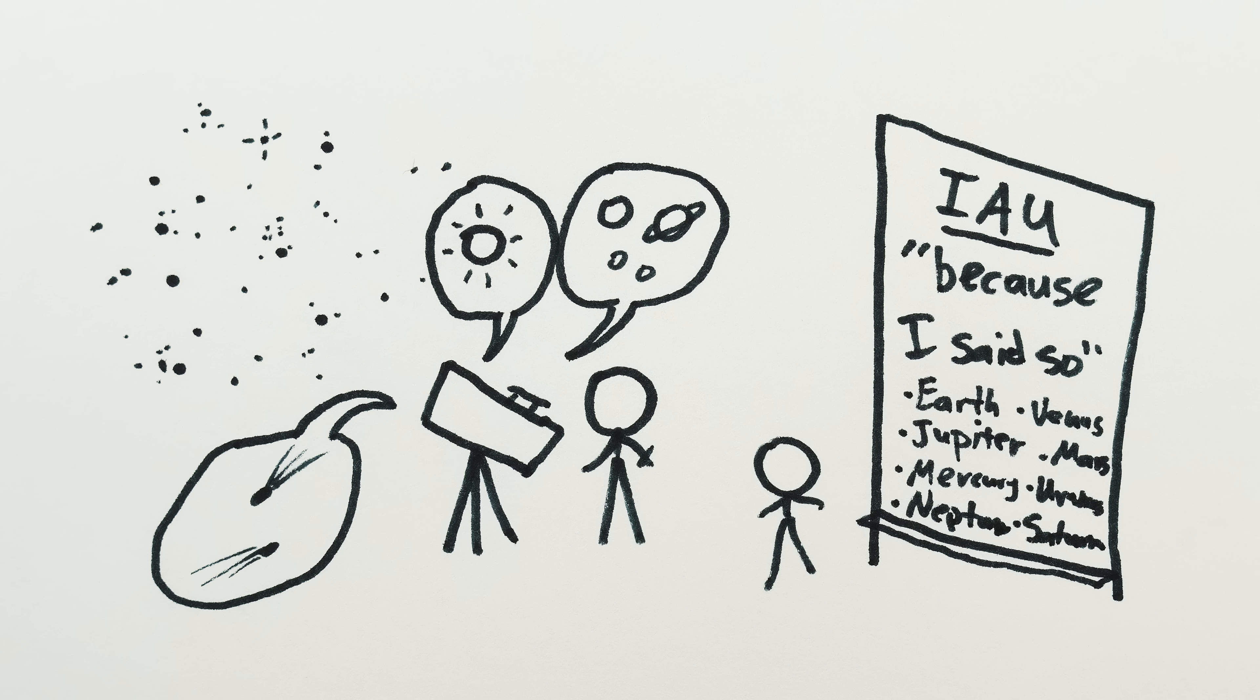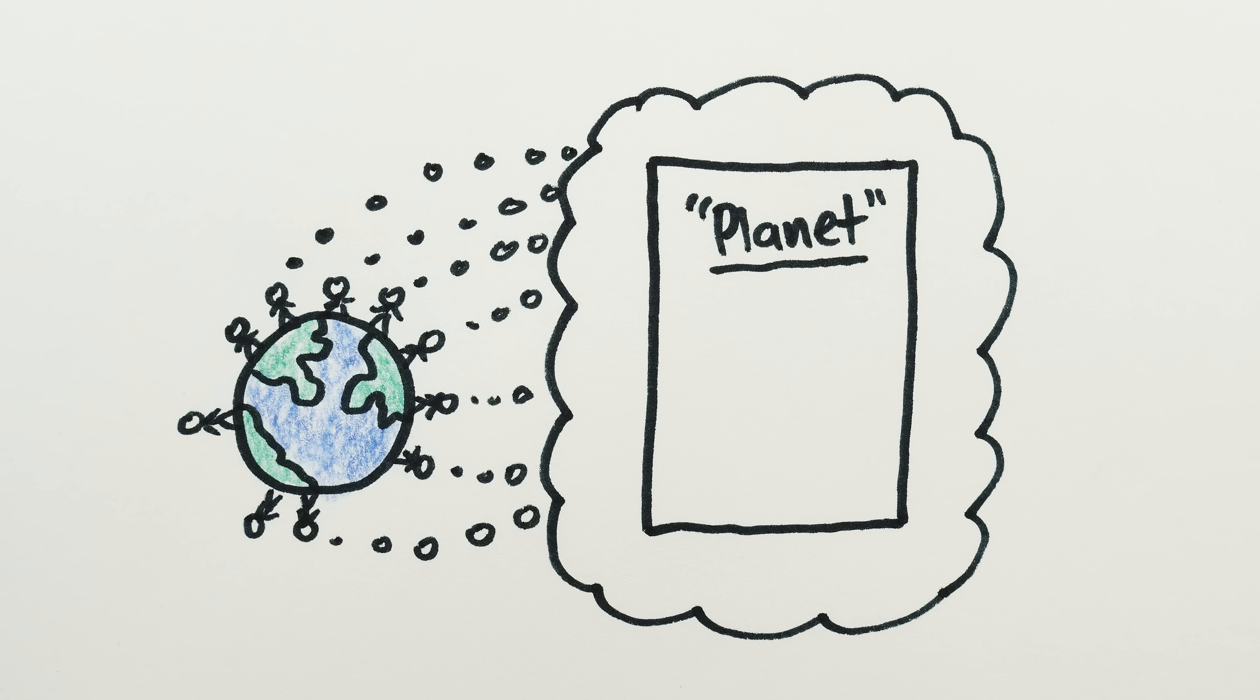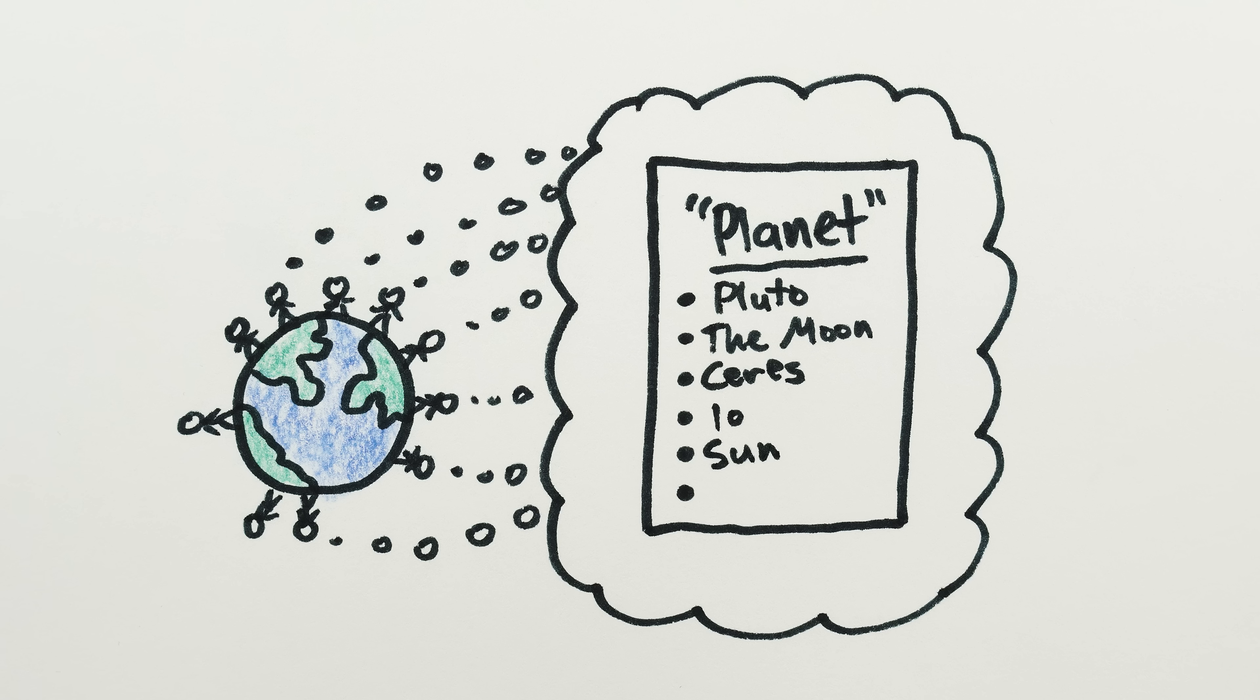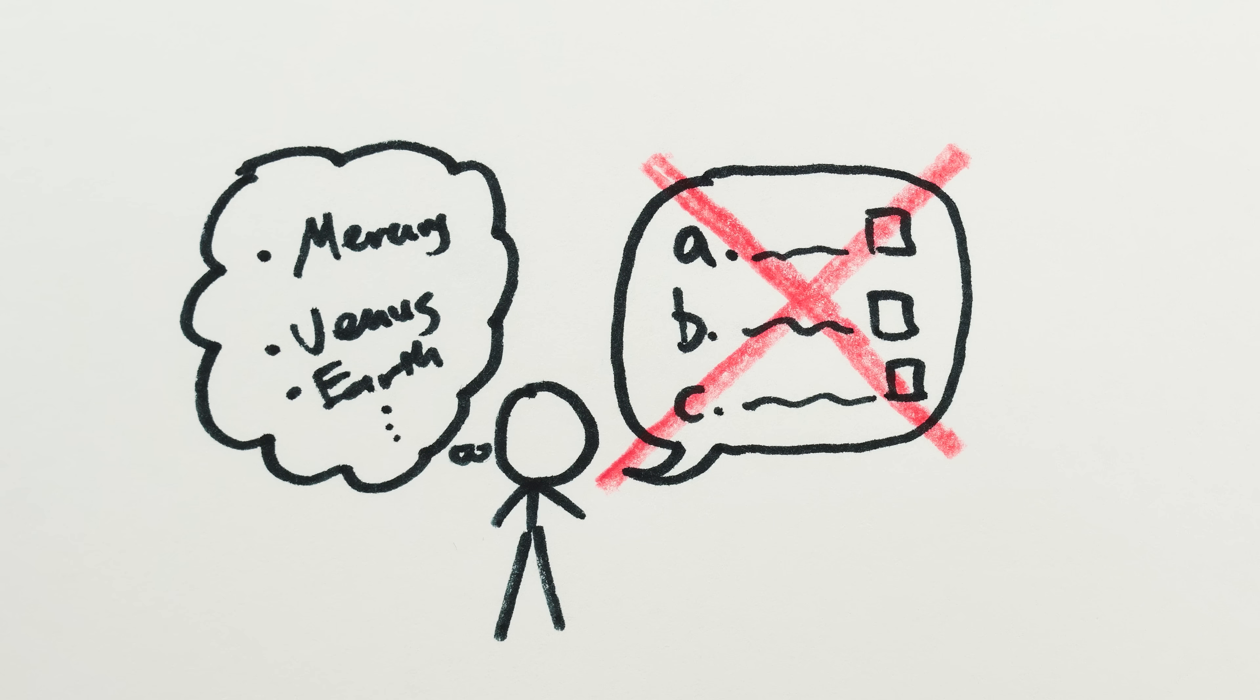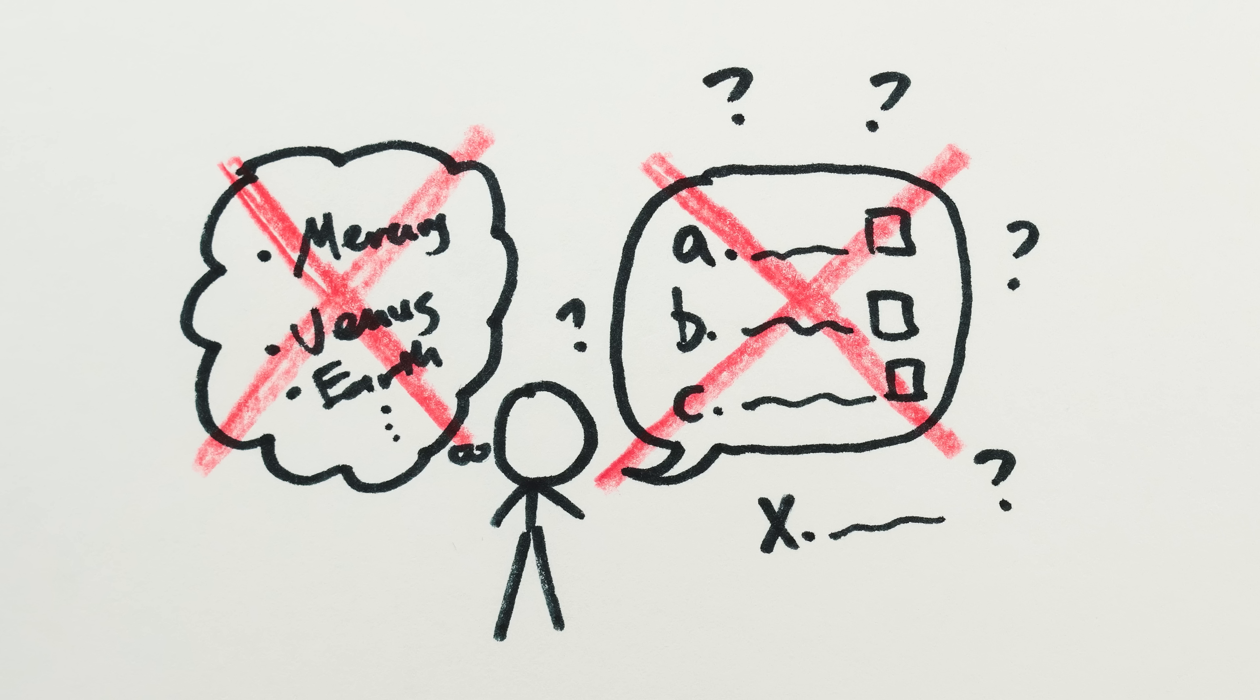If they were at least honest about that, I wouldn't have as much of a problem. Ultimately, planet is a human concept that serves human needs. It wouldn't be that ridiculous to just write down a list and say, these are the objects in our solar system that we all agree to call planets because human culture and history values them as planets. And if we wanted, Pluto could be on that list or not. And the Moon or not. And the asteroid Ceres or not. But I'm not a fan of pretending that an arbitrary list has scientific justification behind it. As we've seen here, the supposedly scientific definition is pretty poorly thought out.